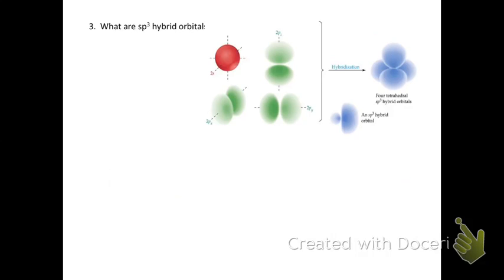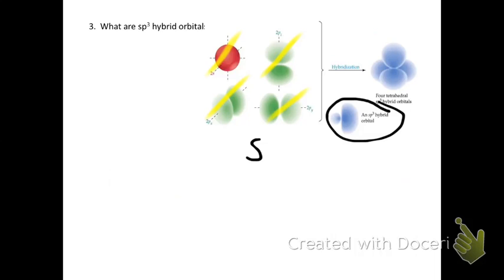The first hybrid orbitals are known as sp3 hybrid orbitals. We're going to use a carbon atom as an example. The general idea is we take four atomic orbitals and combine them together to make sp3 hybrid orbitals. We take one s orbital and three p orbitals — since we use an s orbital and three p orbitals, we call them sp3 hybrid orbitals.